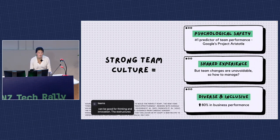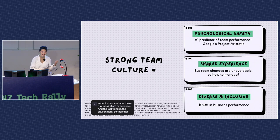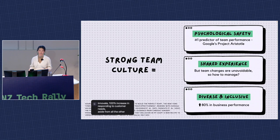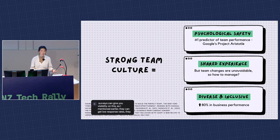The last thing is the environment. Studies have found that environments with both diverse teams and where everyone feels included result in significantly higher business outcomes — an 80% increase in the ability to innovate, a 31% increase in responsiveness to changing customer needs. Even if you had only capitalist reasons for diversity, equity, and inclusion, here they are. Employee engagement and satisfaction surveys can give you visibility on this, but as I mentioned, they can get low response rates and are hard to interpret without your own unconscious bias casting a lens over it.